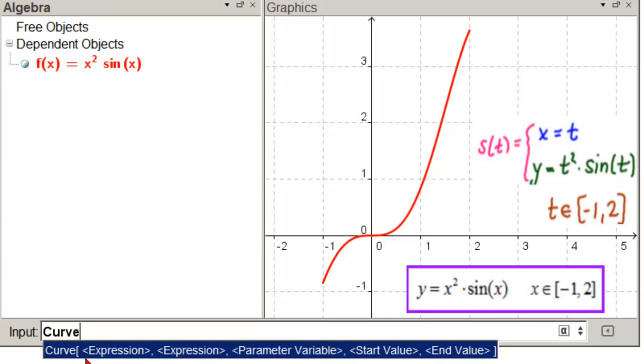And we're interested in this one, which gives us, first expression will be our X of T, Y of T. Our parameter variable will be T. Our start will be minus 1. Our end will be 2. Click.